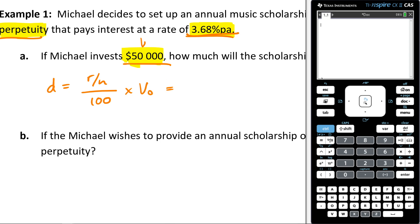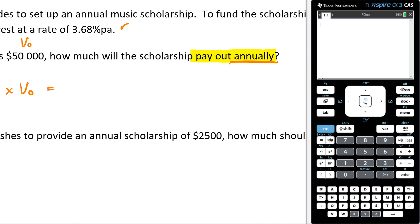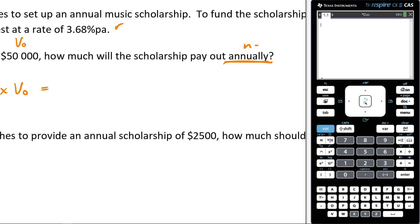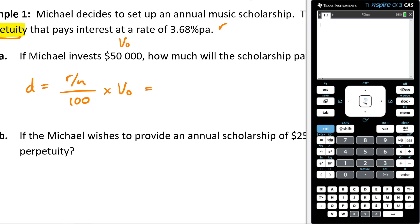Now, V₀ is my $50,000. My R is my 3.68, and the fact that I'm paying out annually means N is equal to 1. So now I'll pop all that information in. I'm going to get 3.68 divided by 1 divided by 100, and then I'm going to times it by 50,000.